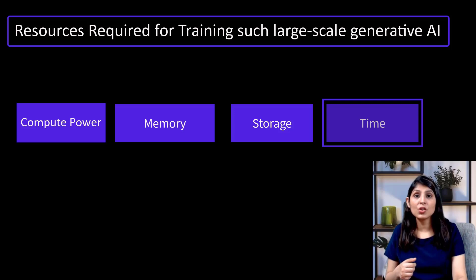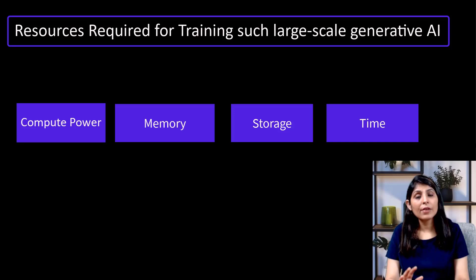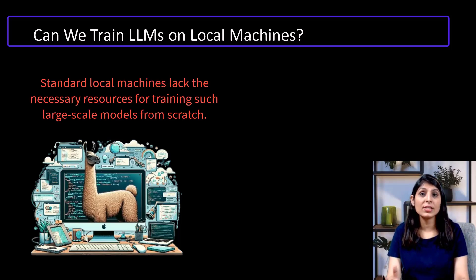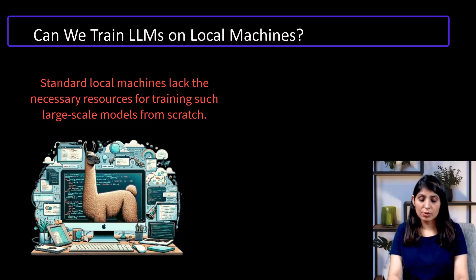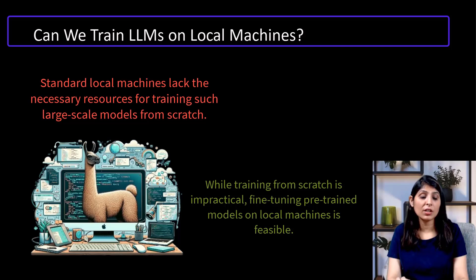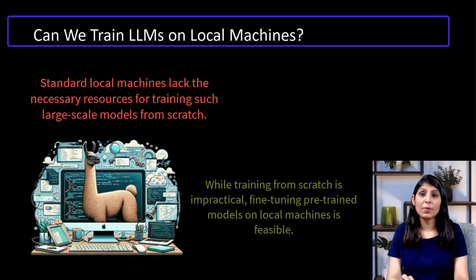The next question is: can we train LLMs on local machines? It is generally impractical to train models like ChatGPT or LLaMA 3 on a standard local machine due to high compute and memory requirements — these models are typically trained on cloud-based platforms that provide scalable GPU resources. However, we can fine-tune LLMs locally as per our requirements. Open source models like LLaMA 3 provide pre-trained models that can be fine-tuned for specific tasks without needing to start training from scratch, allowing developers to save significant costs associated with data collection, processing, and compute resources.